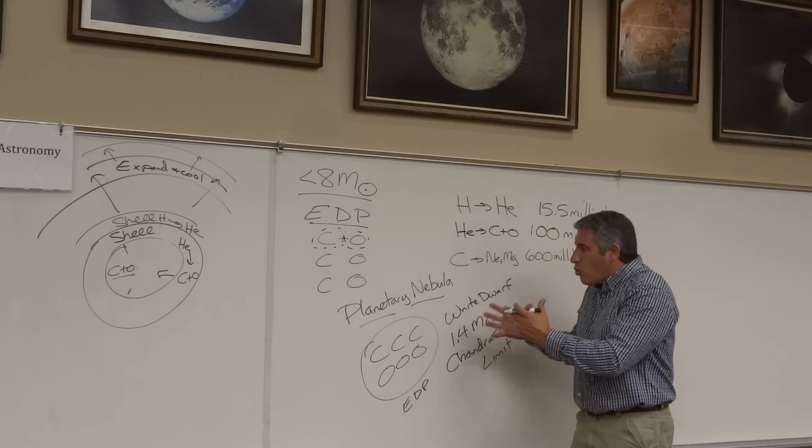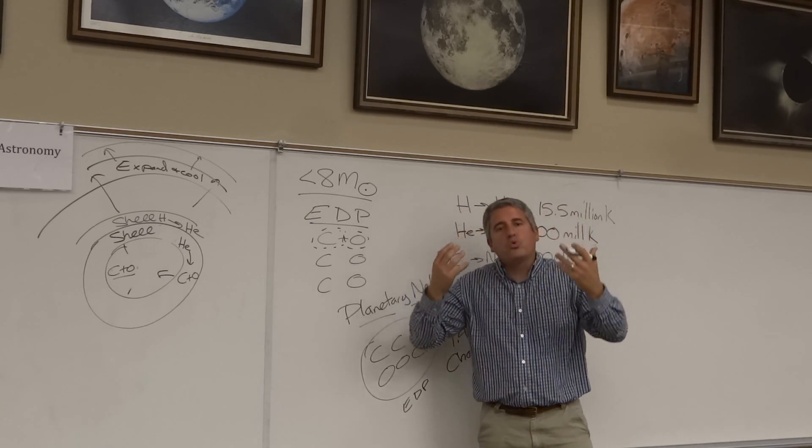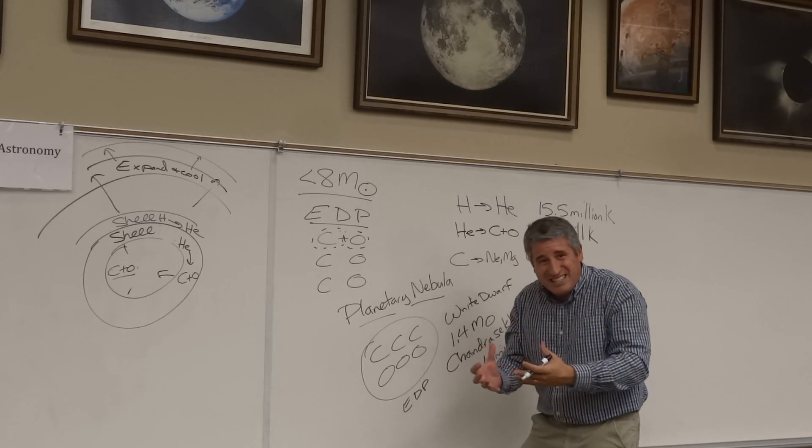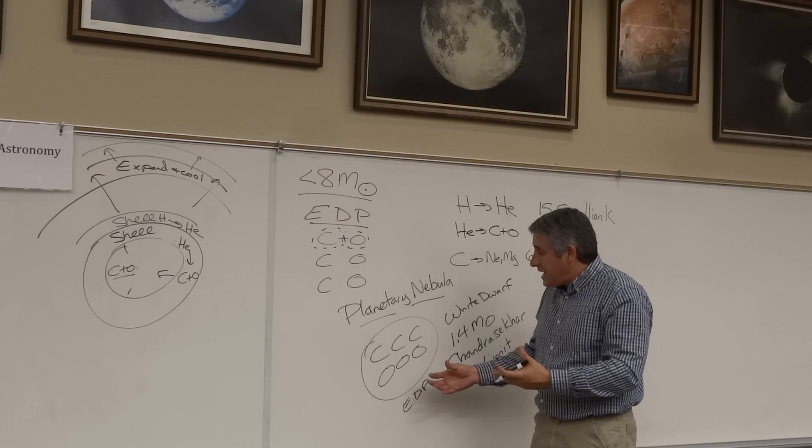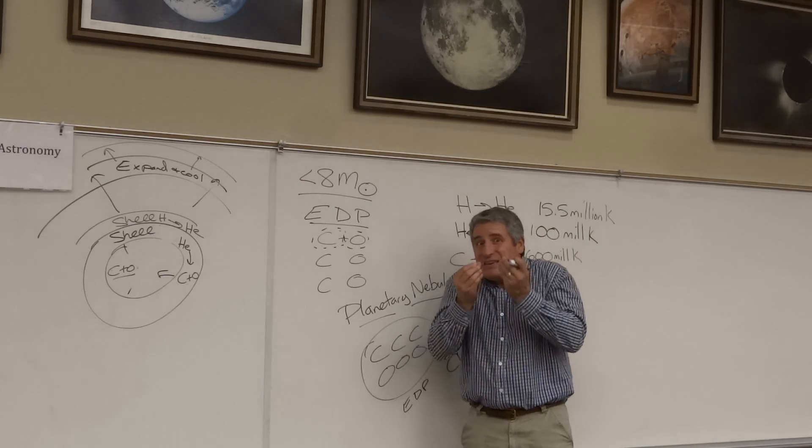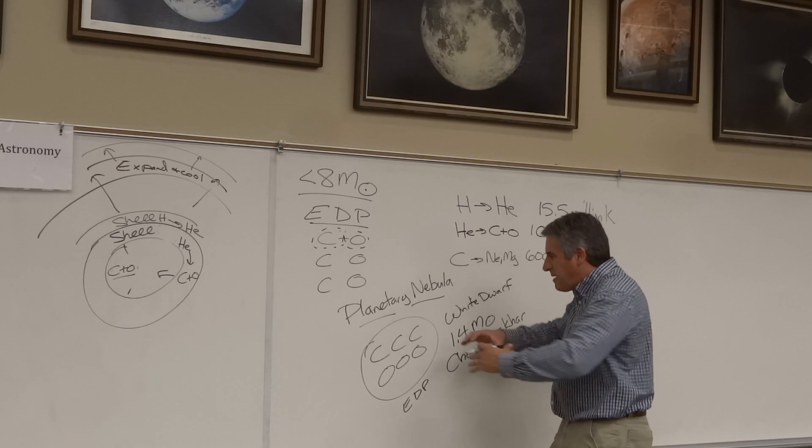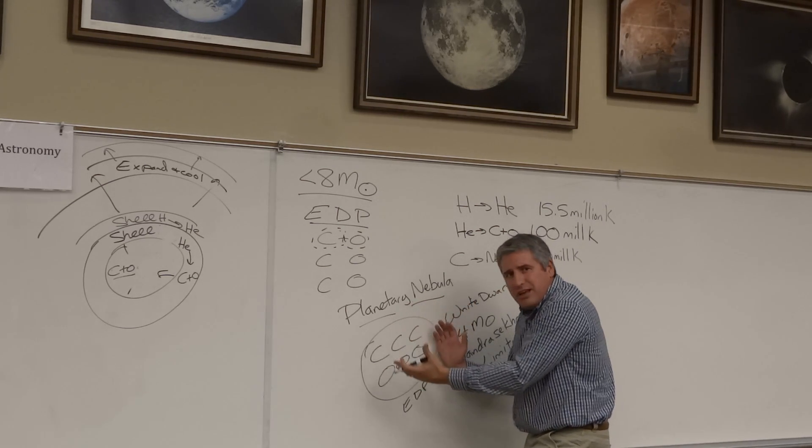Astoundingly this white dwarf is incredibly hot to begin with but then cools off with time. It is incredibly dense. This ball of carbon and oxygen, maybe not unlike a diamond floating in space, 1.4 solar masses in size, about the size of the earth in diameter.